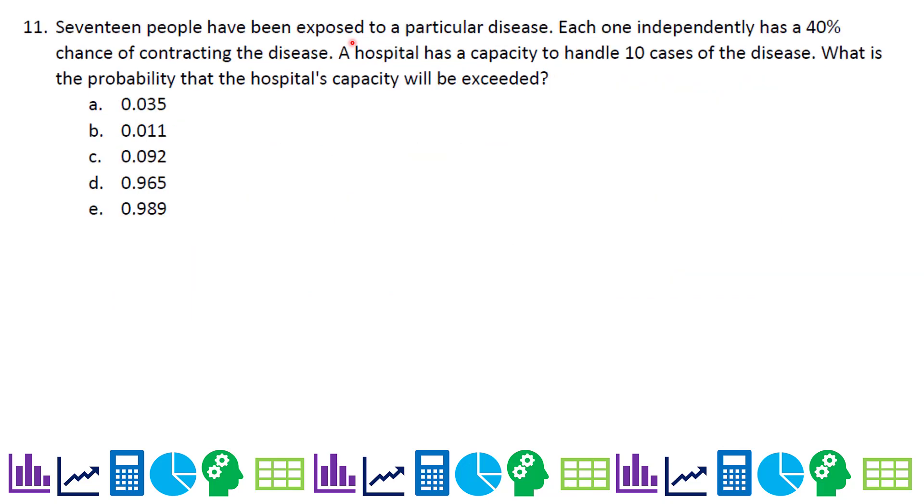17 people have been exposed to a particular disease. Each one independently has a 40% chance of contracting the disease. A hospital has a capacity to handle 10 cases of the disease. What is the probability that the hospital's capacity will be exceeded? This is a binomial distribution. N is 17 and P is 0.4. We're trying to figure out the probability that it's more than 10. So one thing we want to do is say, what are the cases? That means if it's 11 or 12 or 13, all the way up to 17.